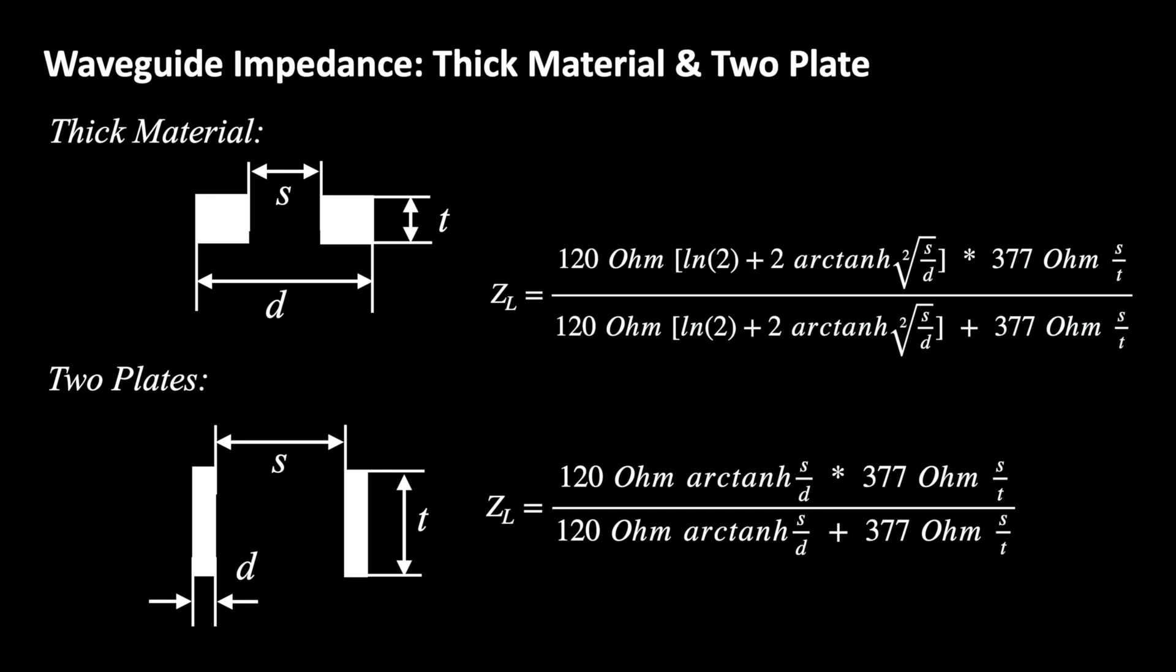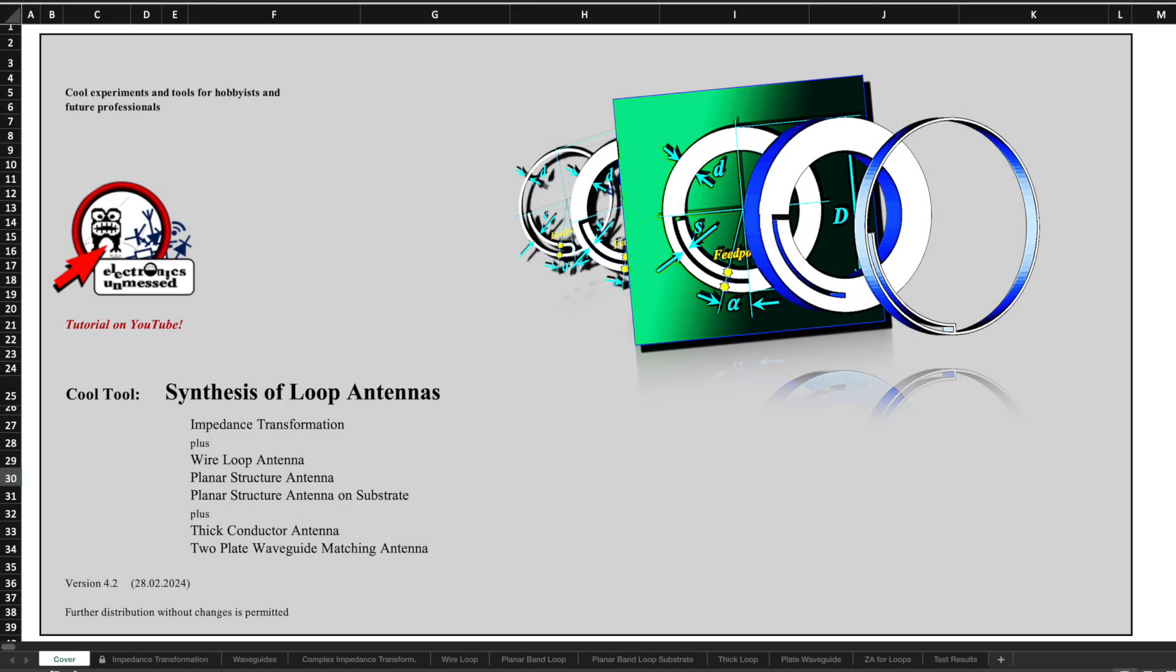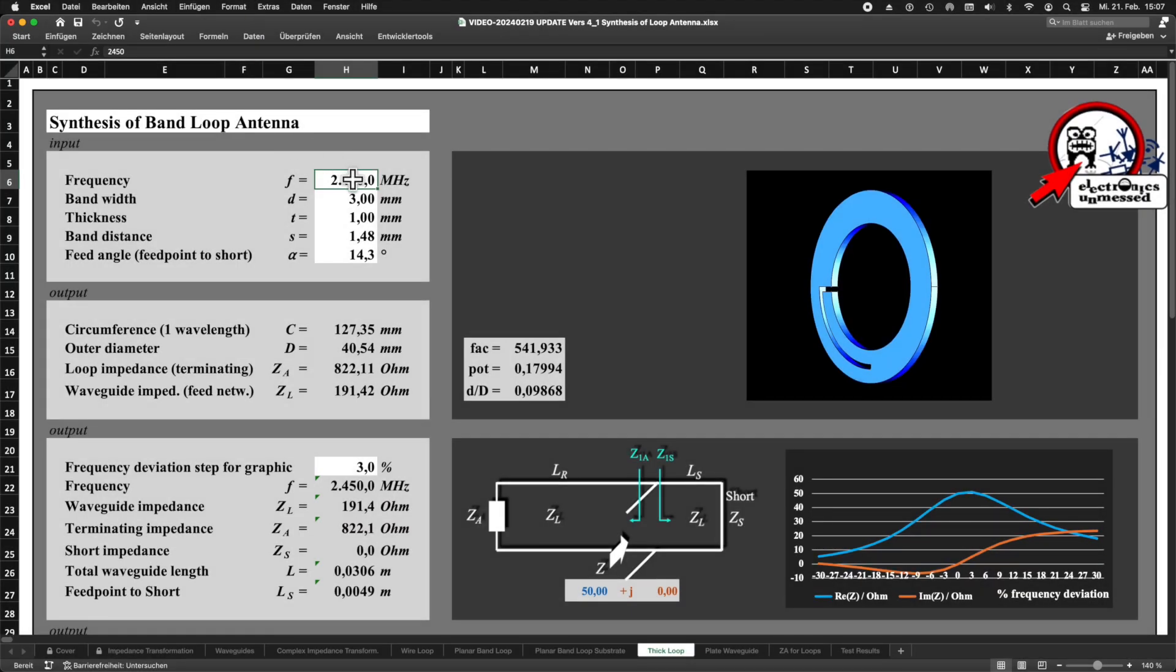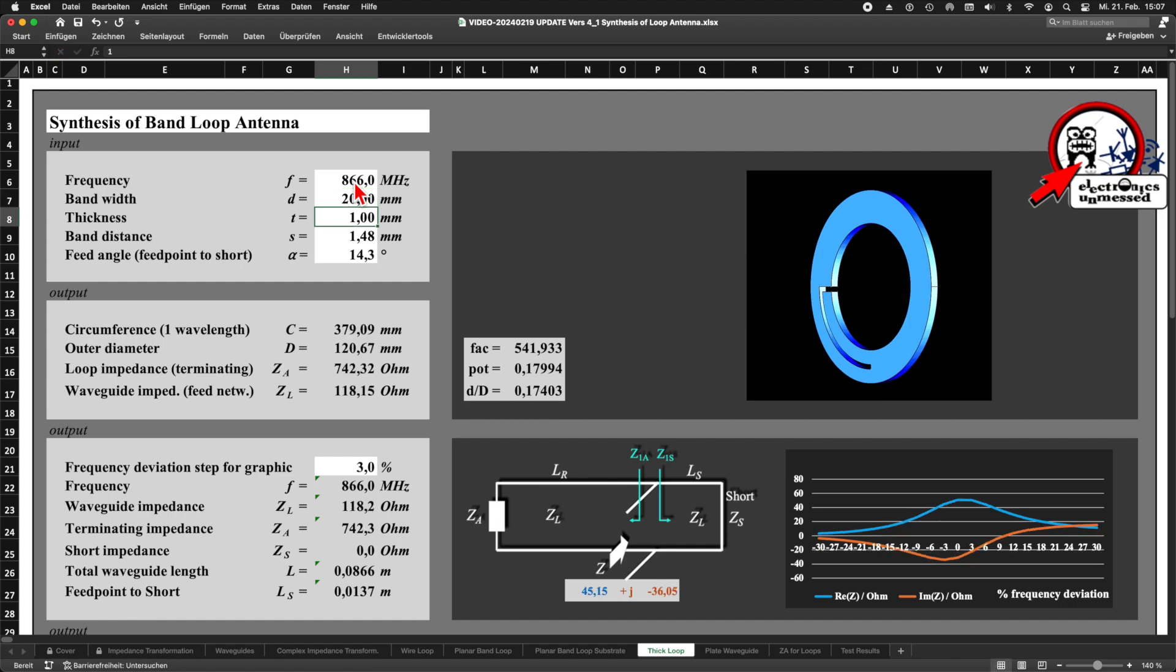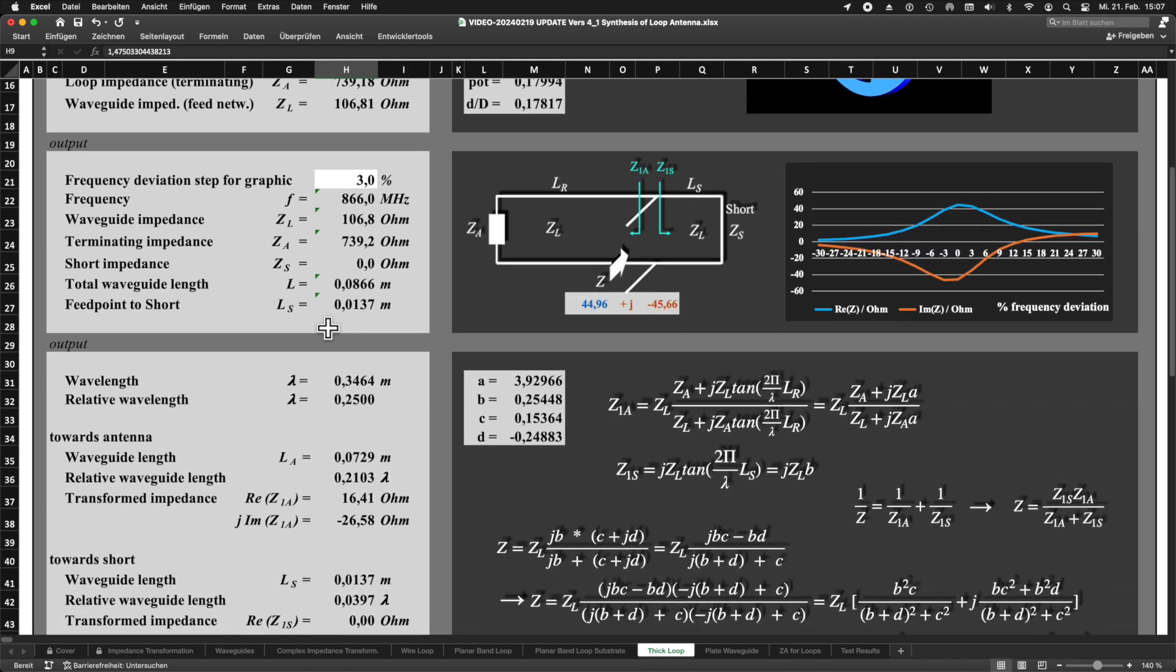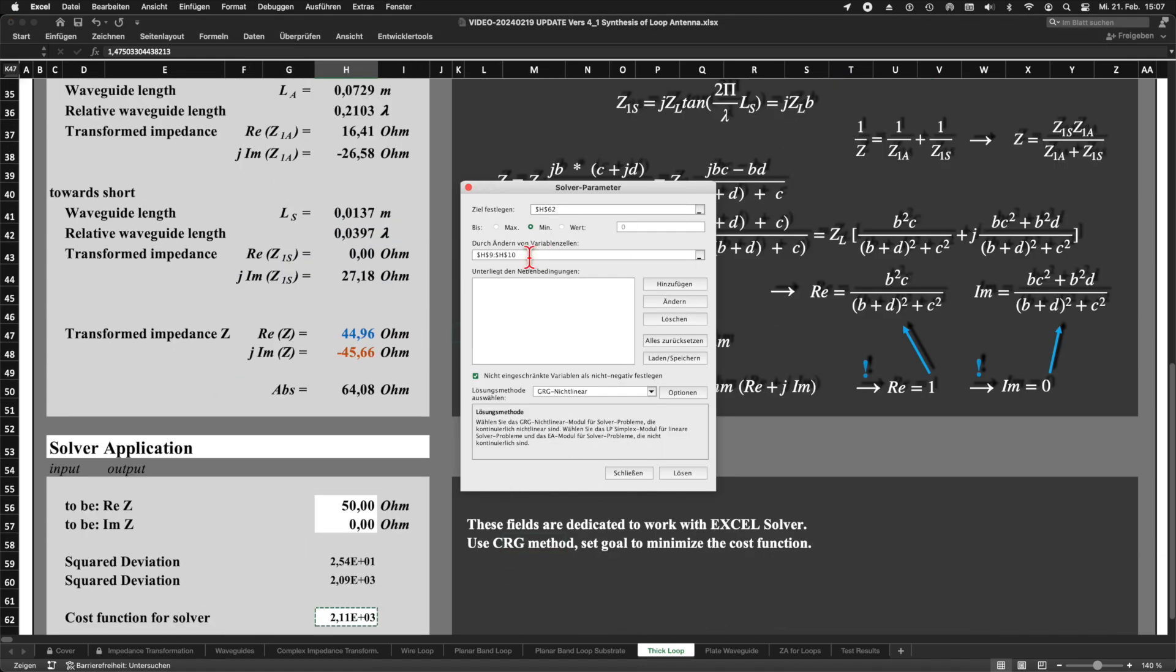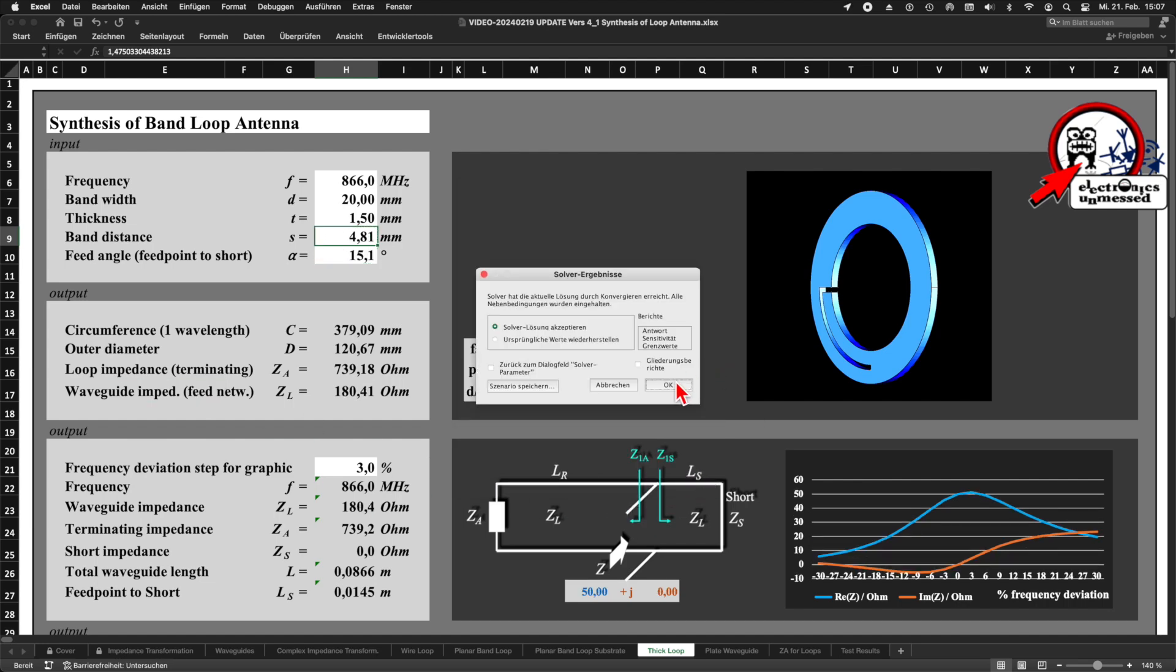What we are really interested in is whether the dimensioning tool actually works. The first example is a LoRa antenna for 866 MHz, which we want to realize from 1.5 mm aluminum material. The handling of the tool is always similar. We enter the desired center frequency up here, then choose the width of the band. Now the material thickness T is added. We are computing the optimum values for the distance s and the angle alpha using the solver. I have shown that several times in earlier episodes.